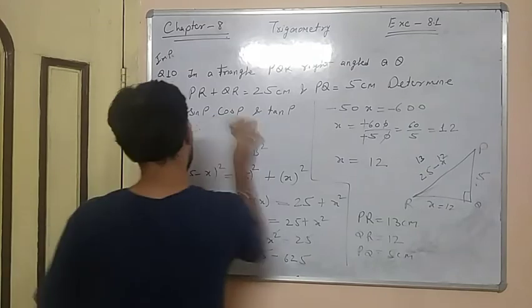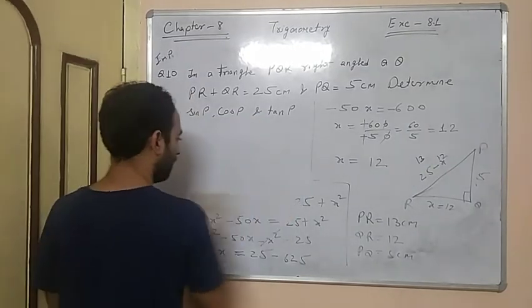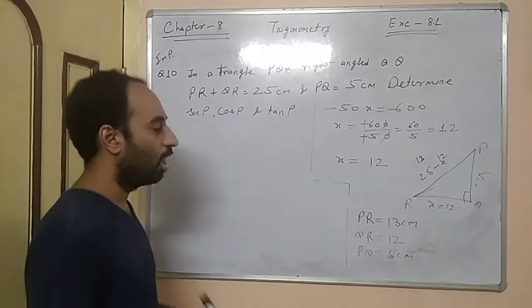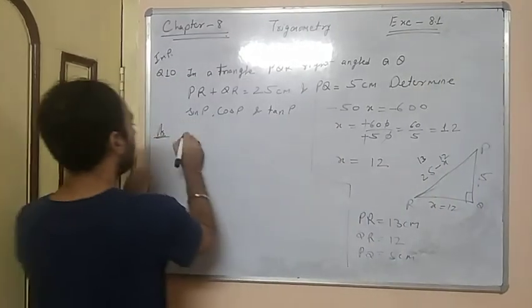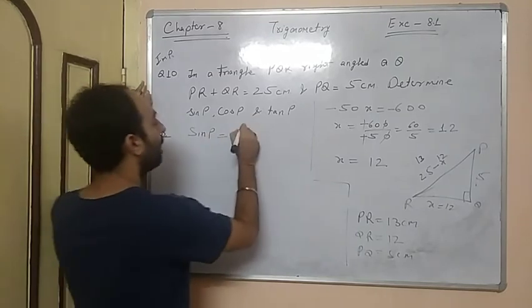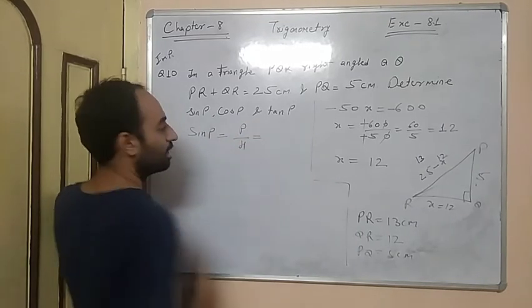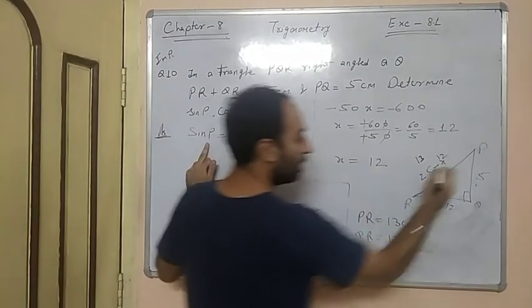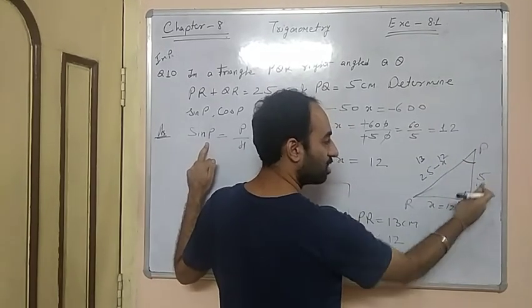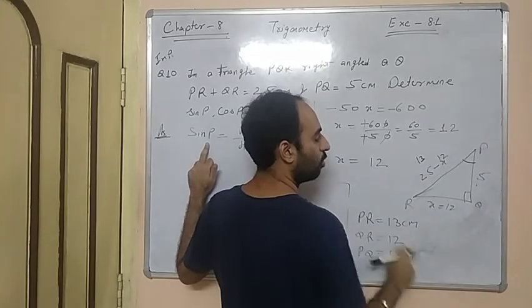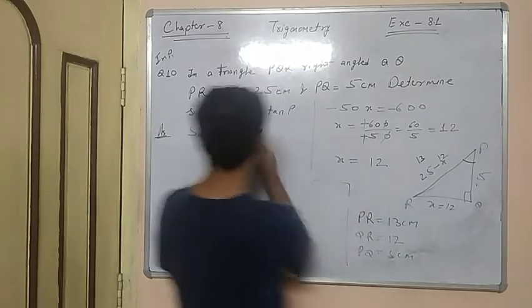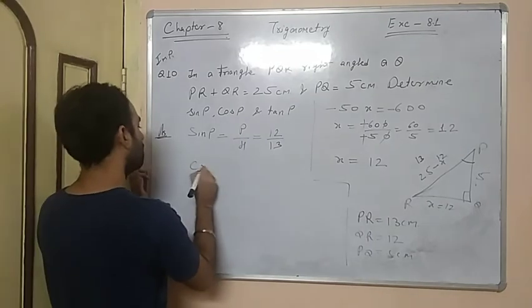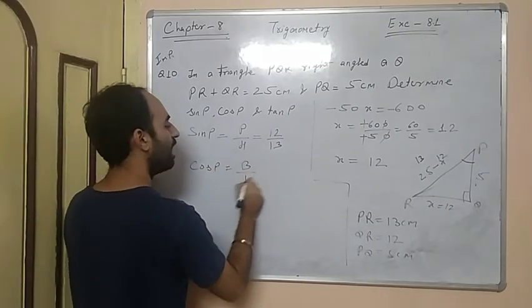Now we are going to find the trigonometric ratios. For sin P, we use the mnemonic Pandit Badri Prasad Har Har Gole — Perpendicular over Hypotenuse. Looking at angle P, the opposite side is QR which is 12, and the hypotenuse is PR which is 13. So sin P equals 12 upon 13. Similarly, cos P equals base over hypotenuse.